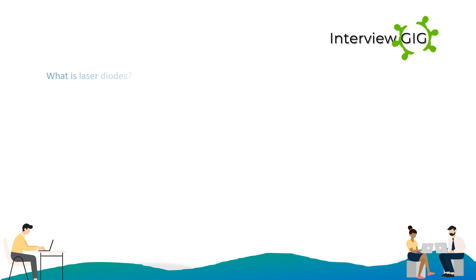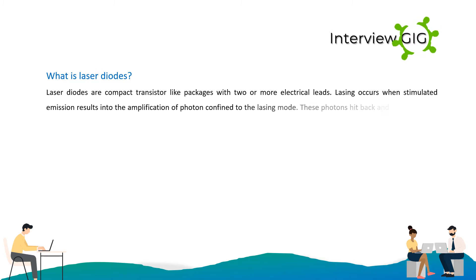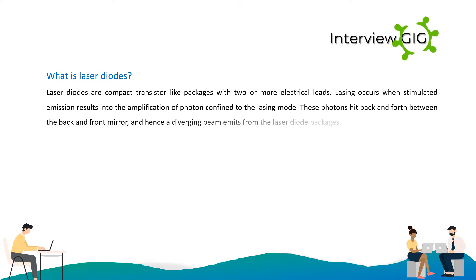What are laser diodes? Laser diodes are compact transistor-like packages with two or more electrical leads. Lasing occurs when stimulated emission results in the amplification of photons confined to the lasing mode. These photons bounce back and forth between the back and front mirror, and hence a diverging beam emits from the laser diode package.